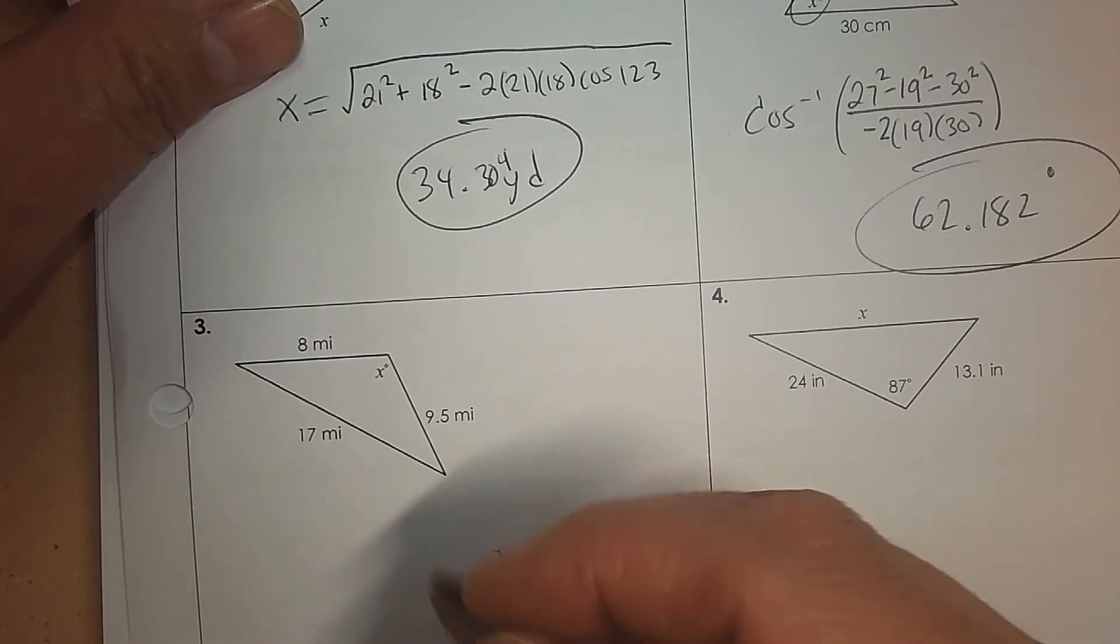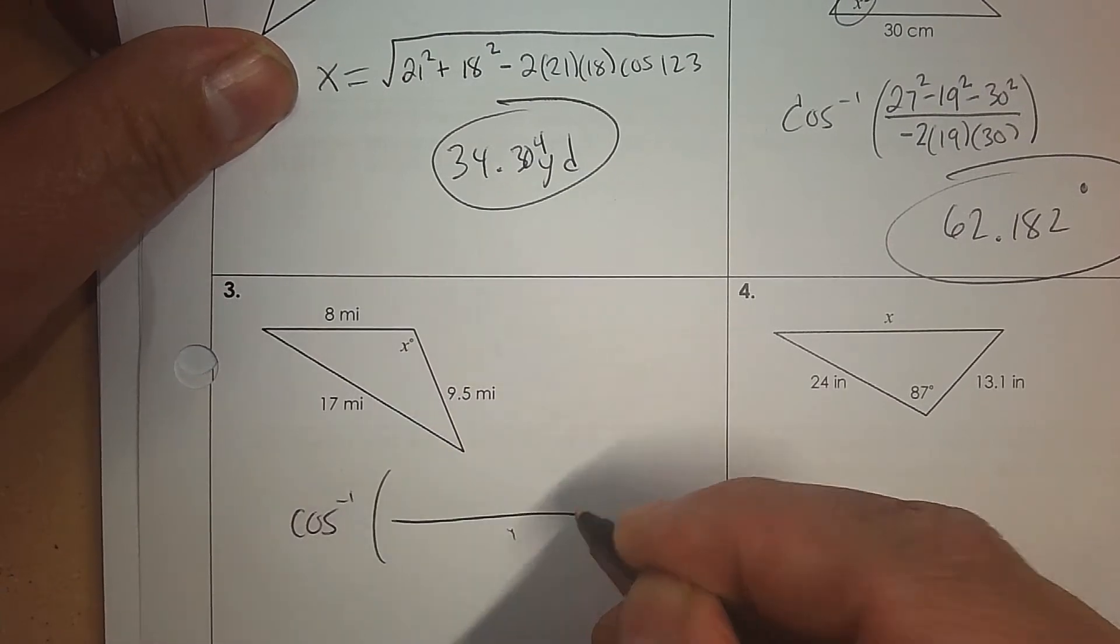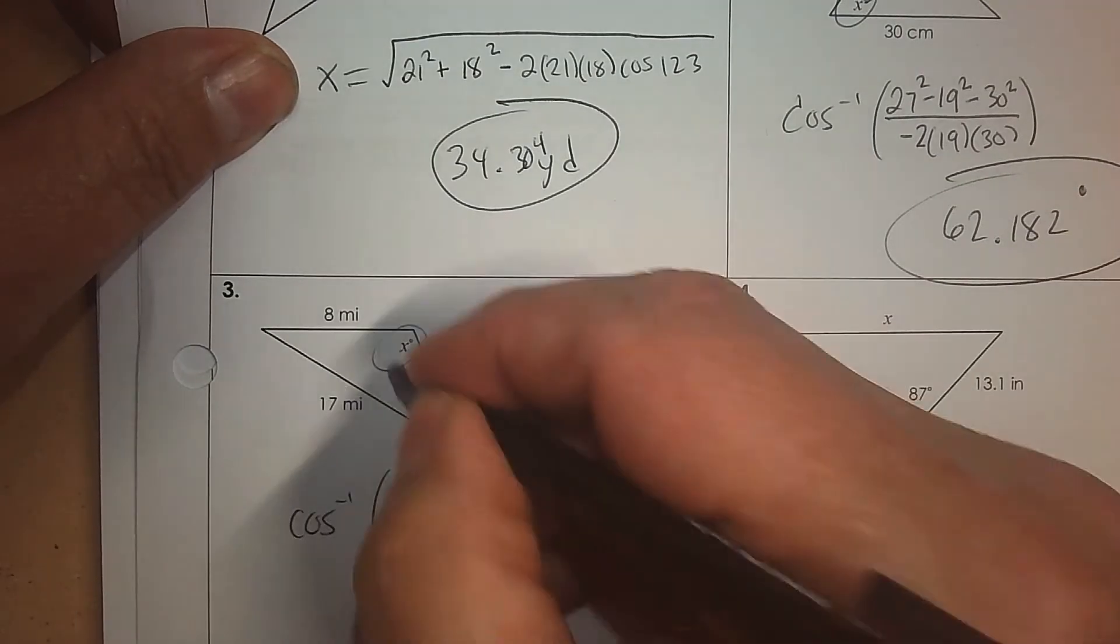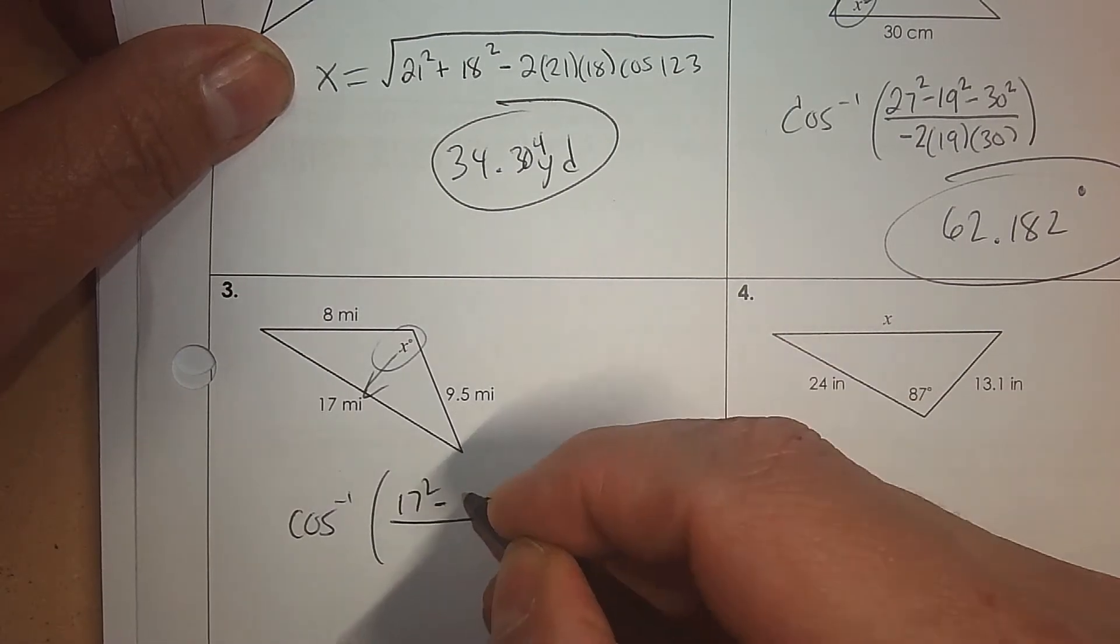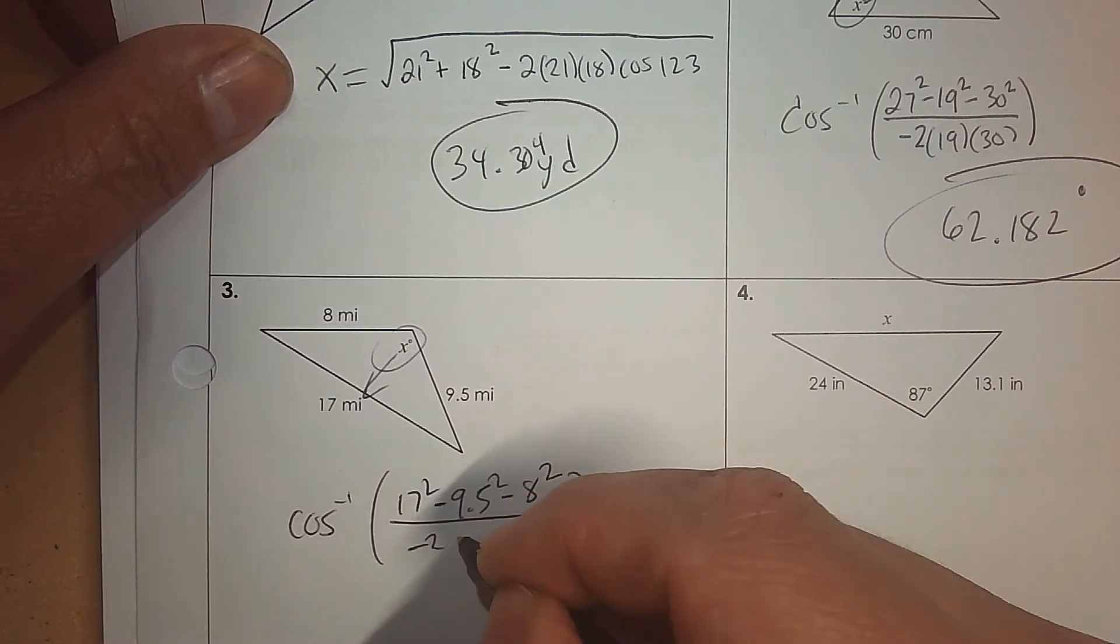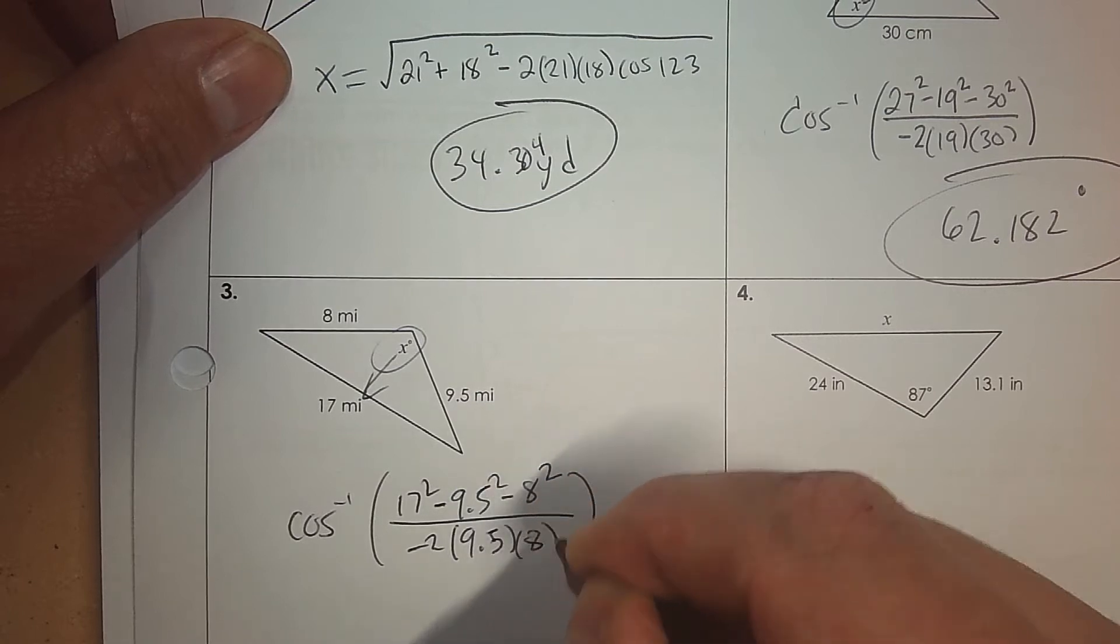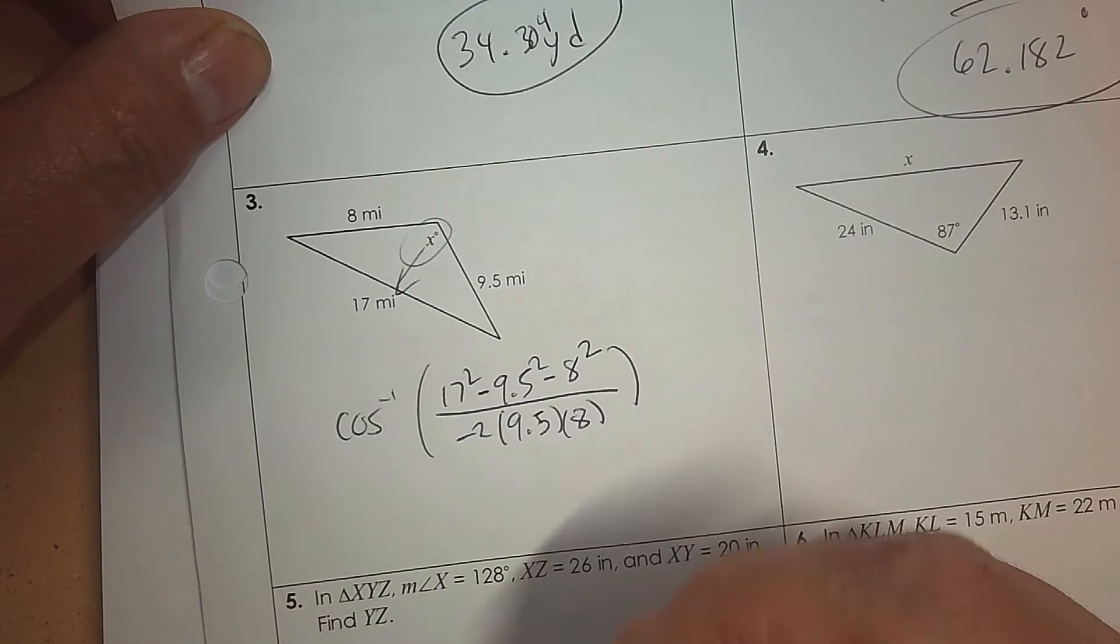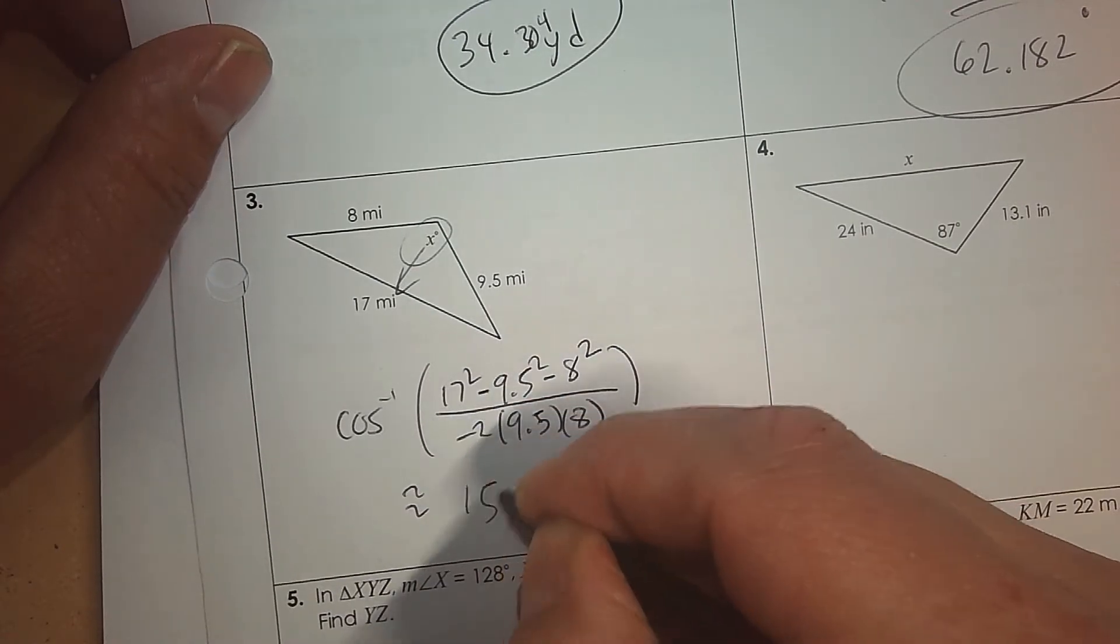Here, what's the setup to find the angle? So big fraction. So we start with 17. So circle the angle. The side opposite you use once. 17 squared. Now we're going to subtract 9.5 squared, subtract 8 squared, and then negative 2 as part of the formula. 9.5 and then 8. So these repeat twice in the denominator. 17 is only used once, and that's it. And the answer is approximately 152.4.